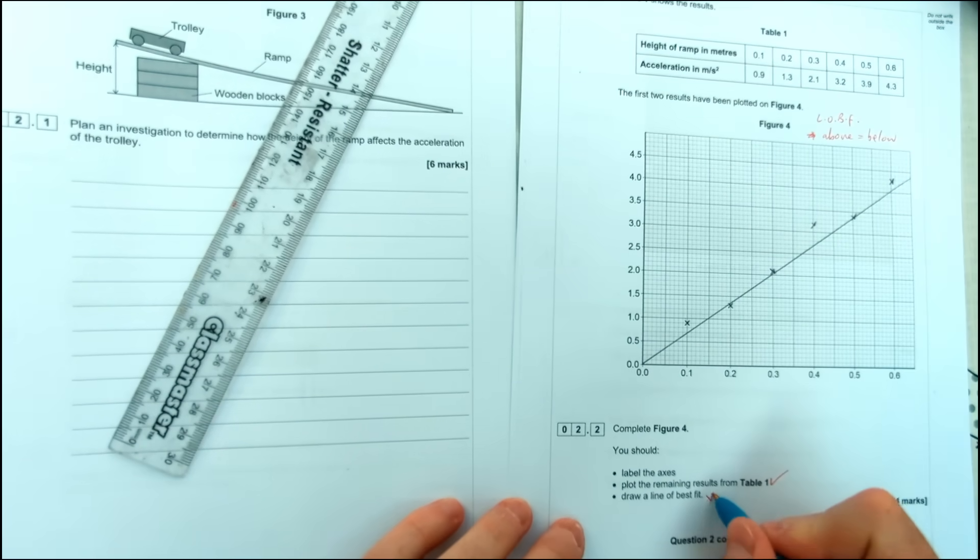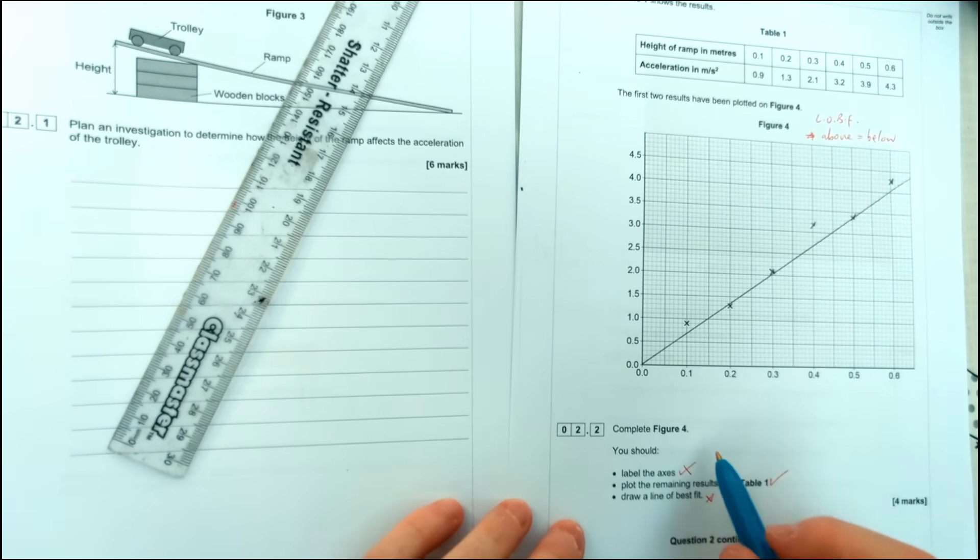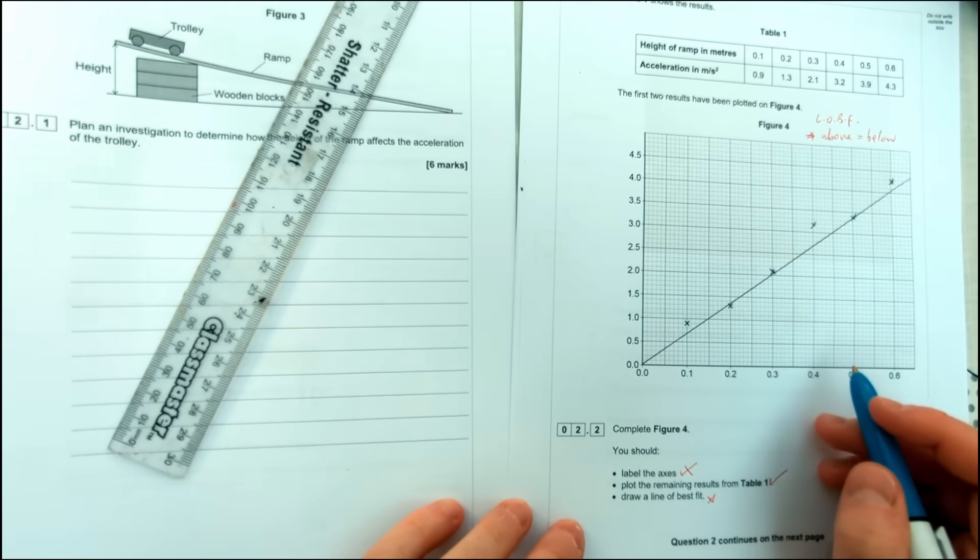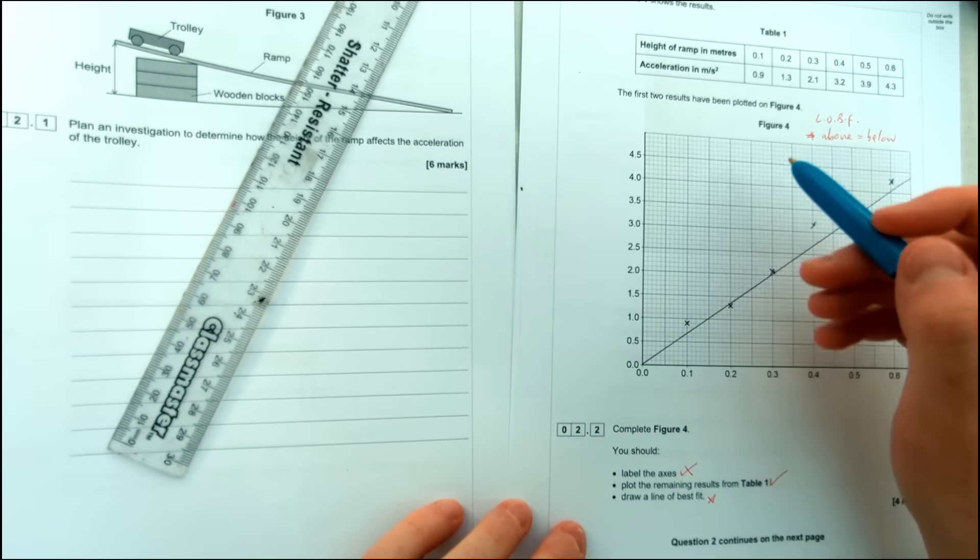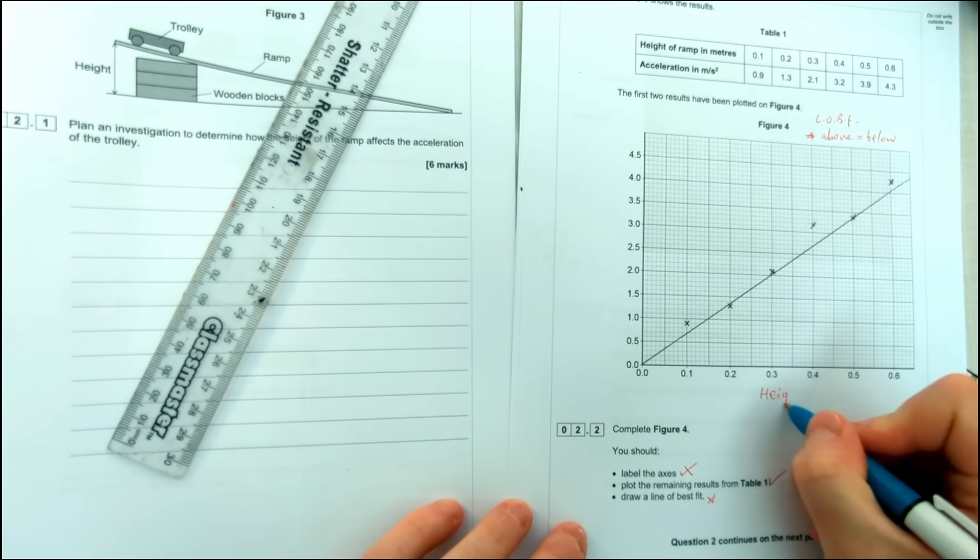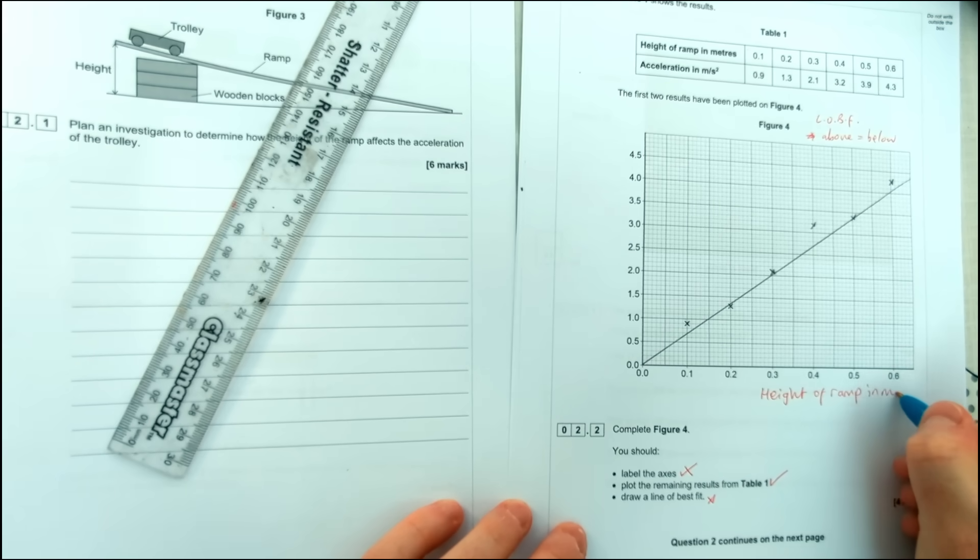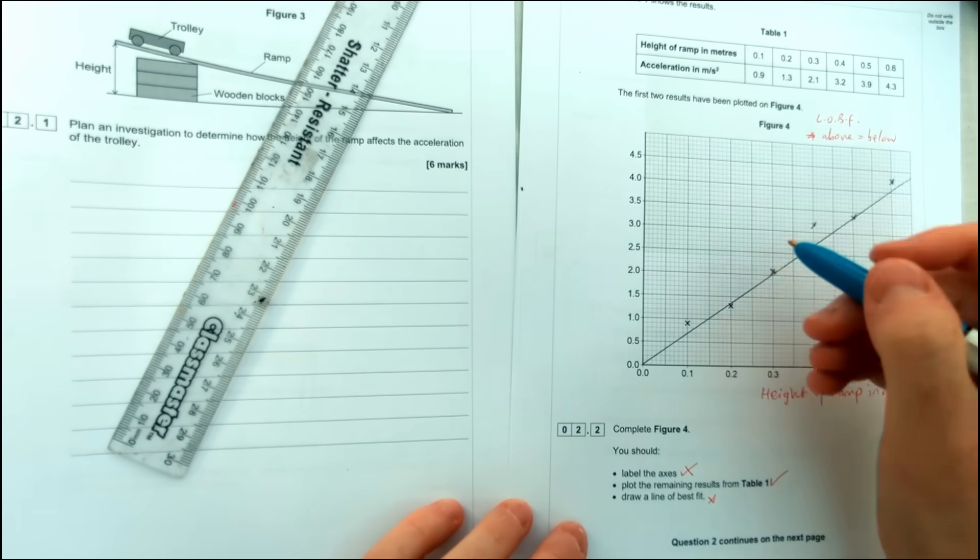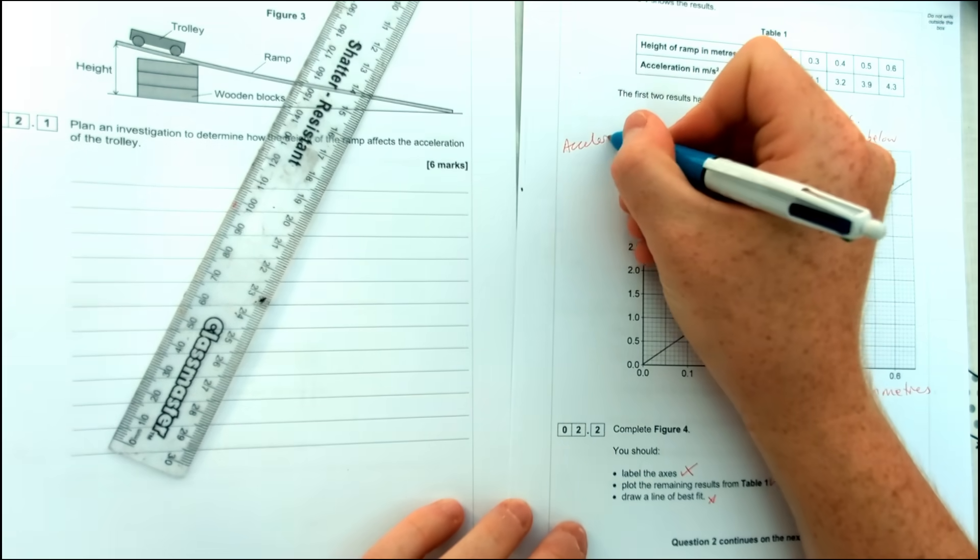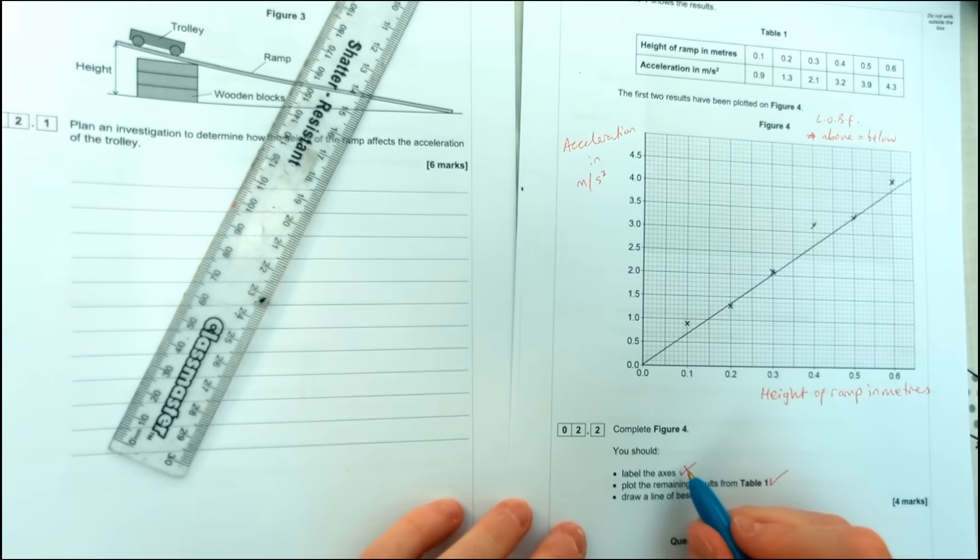Now more importantly they've lost that mark, they've also not done this little bit here which is labeling the axes, which is going to be one of the easier marks you get on the paper because you've just got to copy what's in the table to what's on each axis. So here it says the height of the ramp, so height of ramp in meters. And we've got up here to the left we've got acceleration in meters per second squared. That should be the easiest mark you get on the whole paper. Just don't miss it. Make sure you go through each of these bullet points if you get a question like this and tick them off as you go.